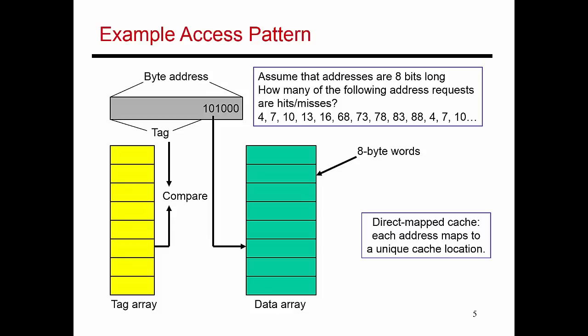Now that we've seen how to take an address, decompose it into offset, index, and tag, we've seen how those addresses are mapped into the cache, let's go through an example.